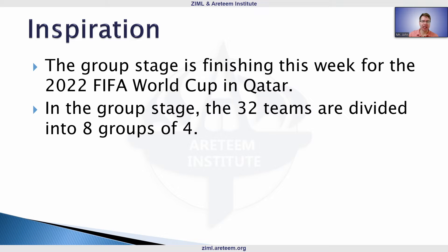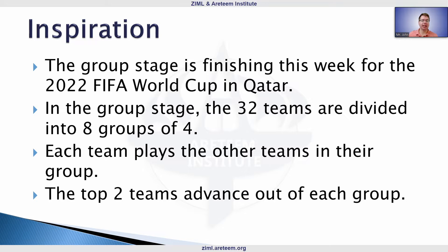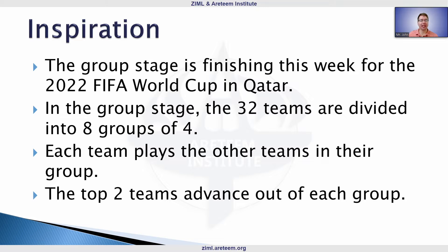There are 32 teams in the World Cup divided into eight groups of four teams. Each team plays the other teams in their group one time, and the top two teams advance out of each group. We'll focus on the points teams earn and how they earn them.